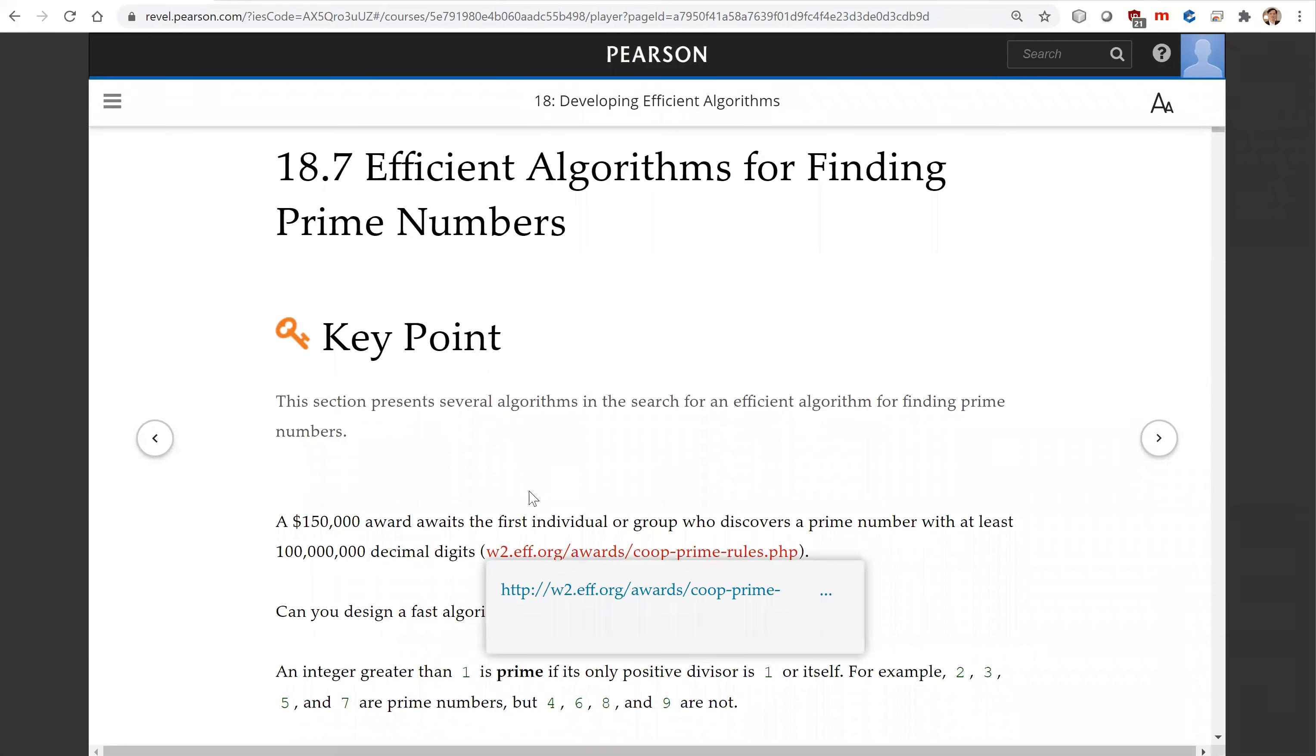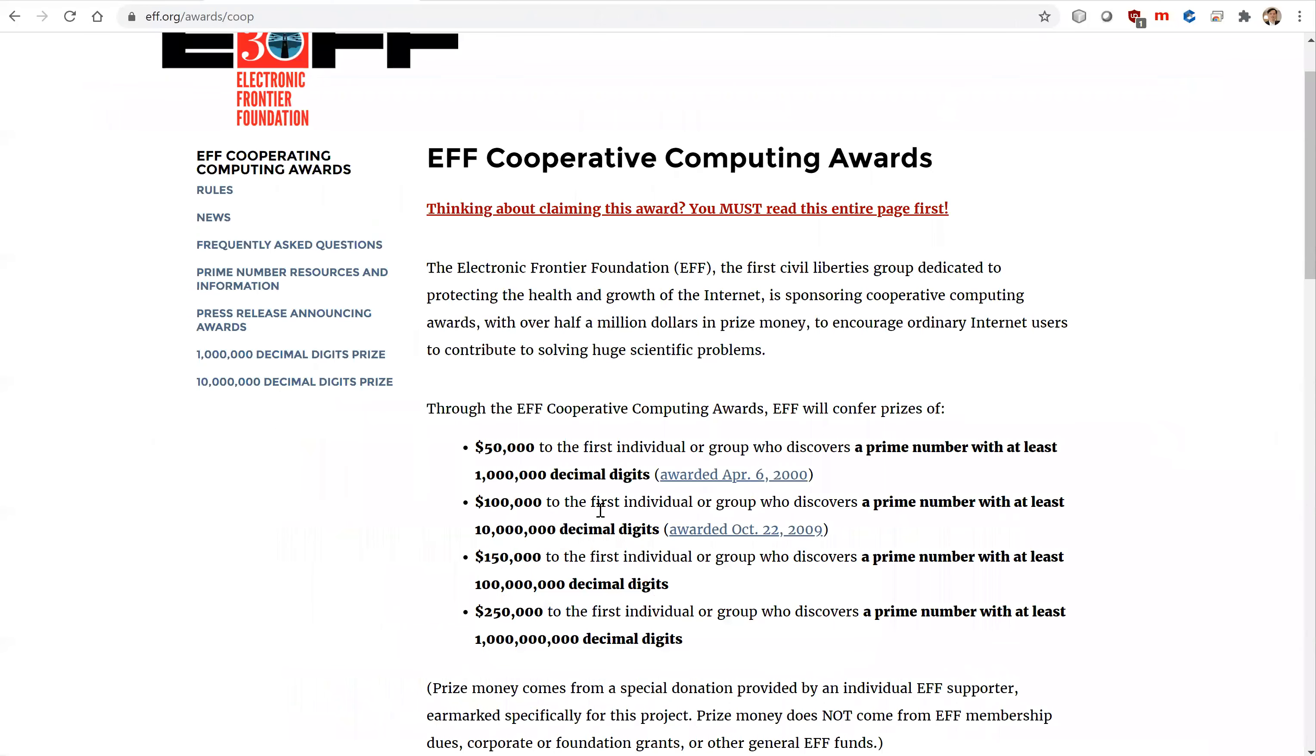So here's a website that gives out awards for people who discover prime numbers with at least 1 million decimal digits, at least 10 million decimal digits, and at least 100 million decimal digits.